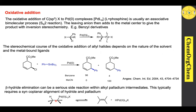The beta-hydride elimination can be a serious problem in the Stille cross-coupling reaction. When you use an alkyl halide, it can quickly undergo beta-hydride elimination. This typically requires a syn-coplanar alignment of the hydride and palladium.